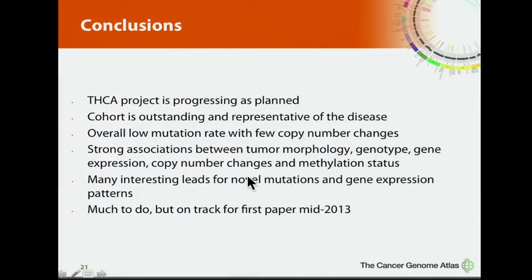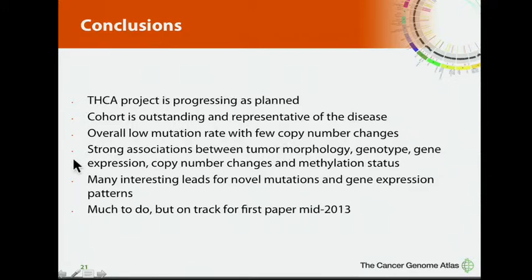In conclusion, we're making good progress and progressing as planned. The cohort is outstanding and truly representative of the disease — not true for every paper in the literature, where people cherry-pick cases. We have a low overall mutation rate with few copy number changes, but a few tumors have increased copy number changes which we'll spend more time on. We've uncovered and reproduced strong associations between tumor morphology, genotype, gene expression profile, copy number changes, and methylation status. We've uncovered many interesting novel leads — mutations and gene expression patterns — to keep us busy for quite some time. We still have to decide whether to fill out the whole cohort, but we're on track for our first paper in the middle of next year.